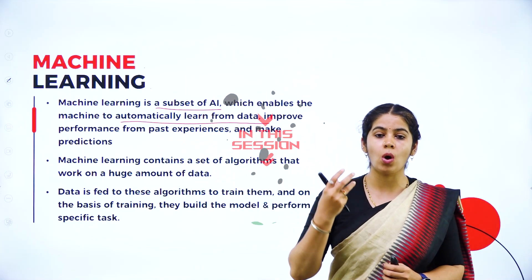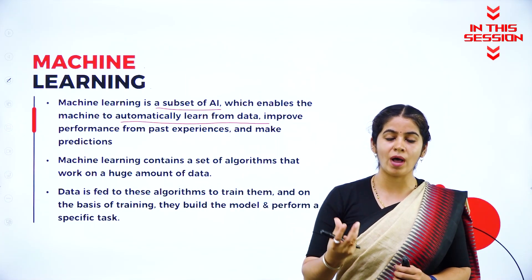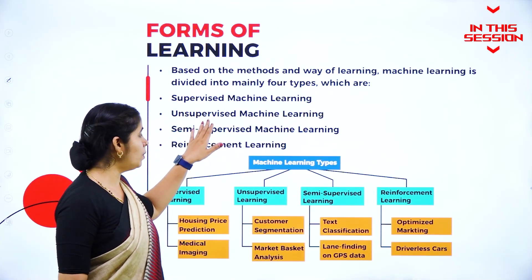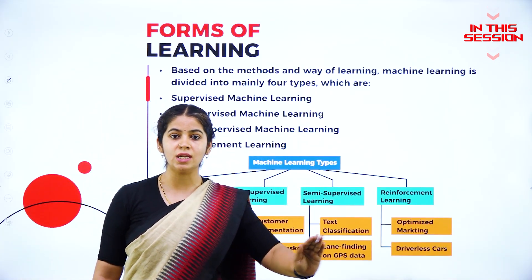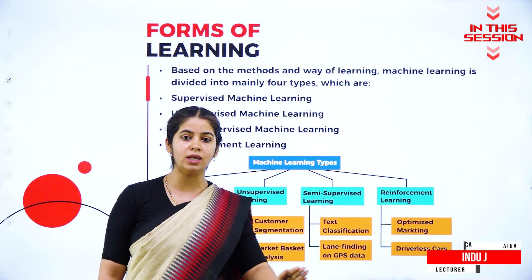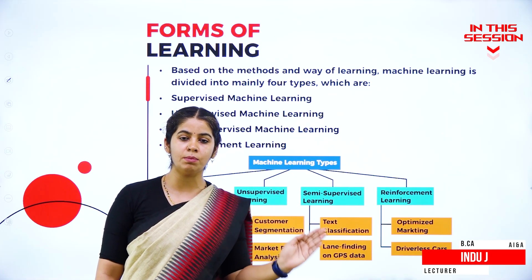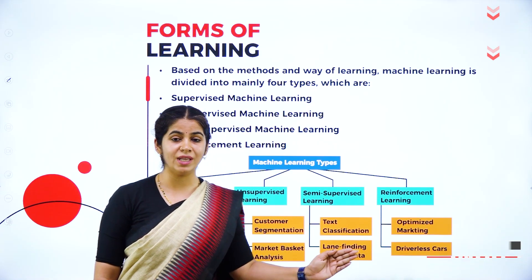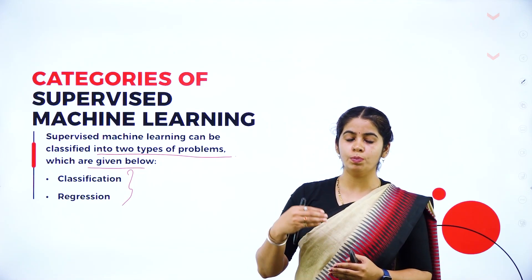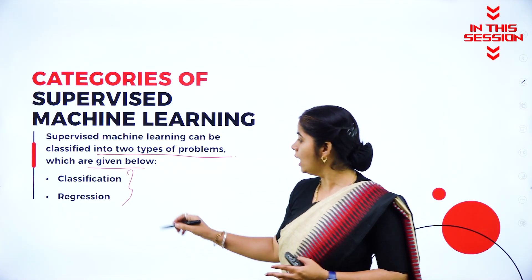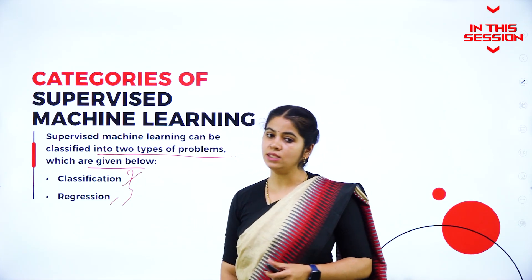In unsupervised learning, no one is monitoring the learning of the machine — the machine will have its own data, learn by its own data, and produce its own output. The supervisor can give training in two forms: one is classification and one is regression.